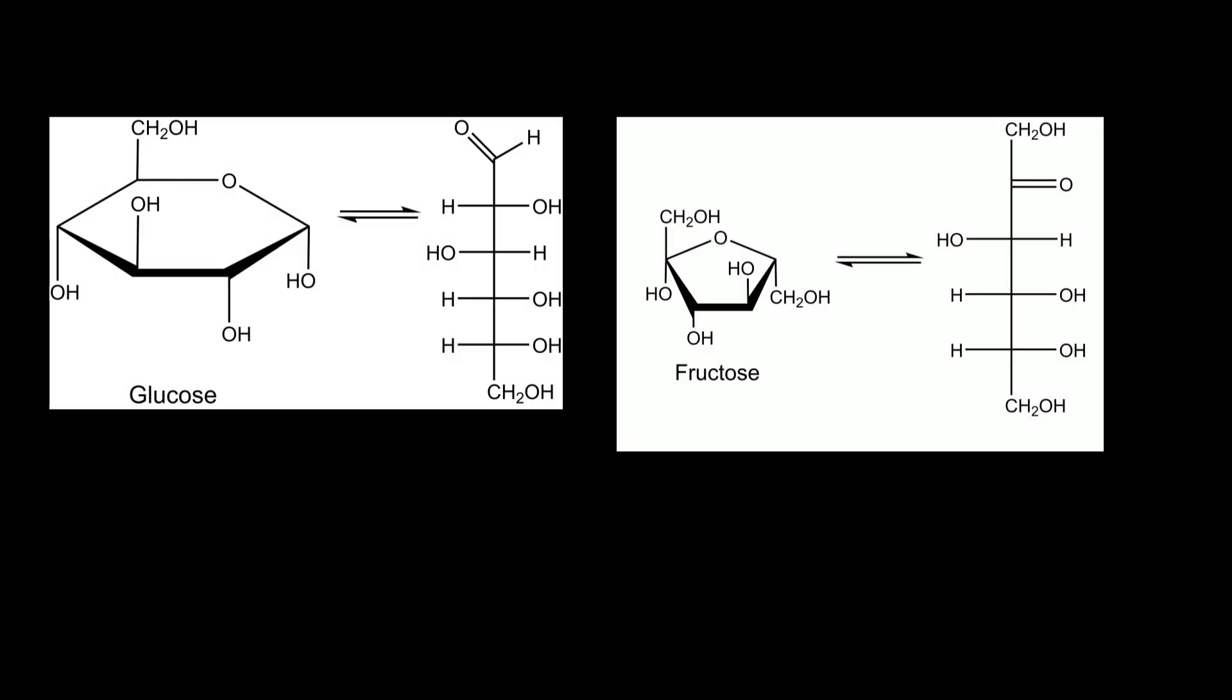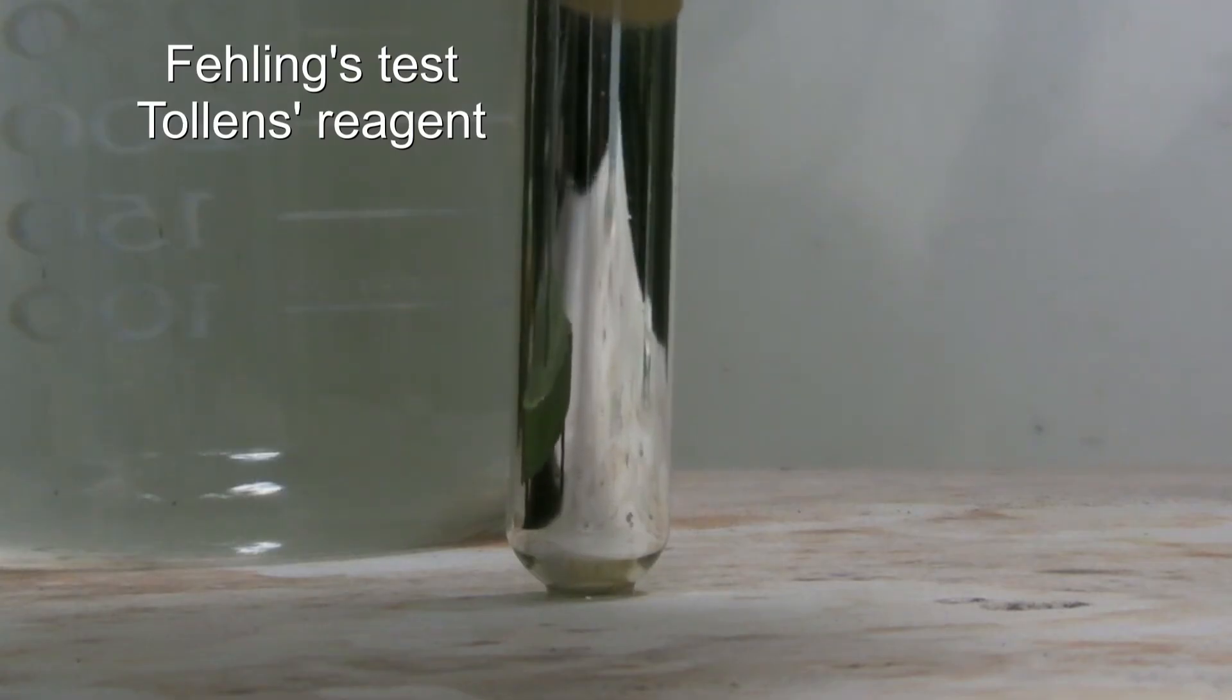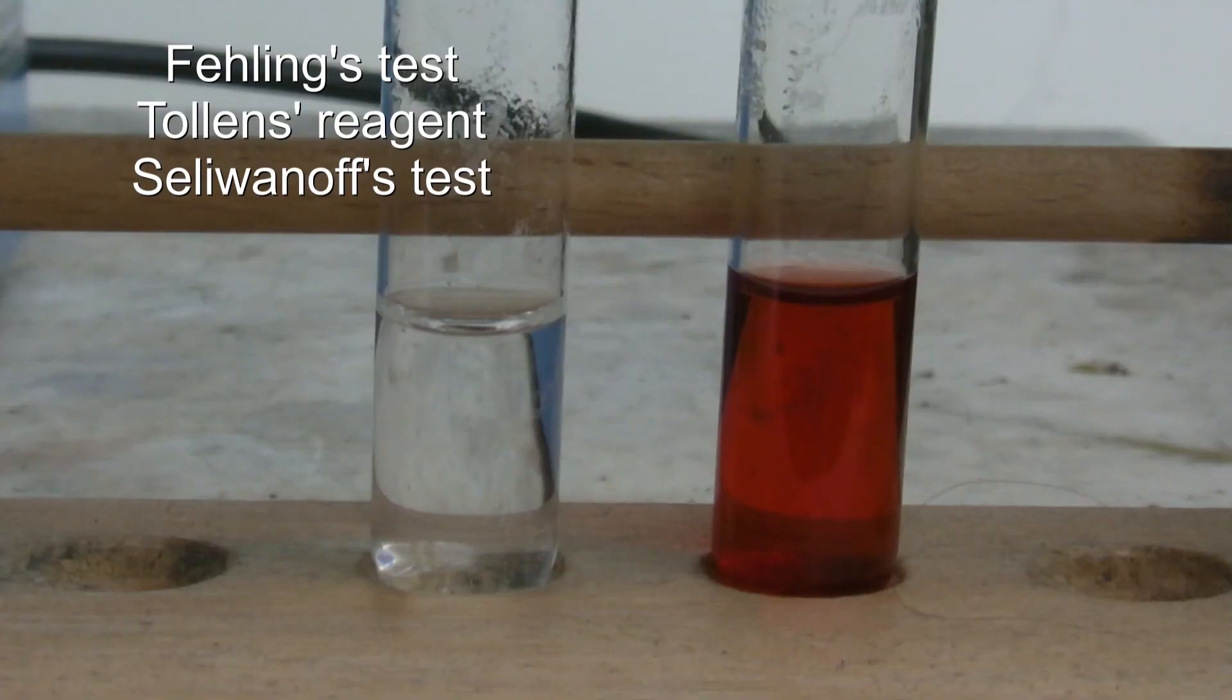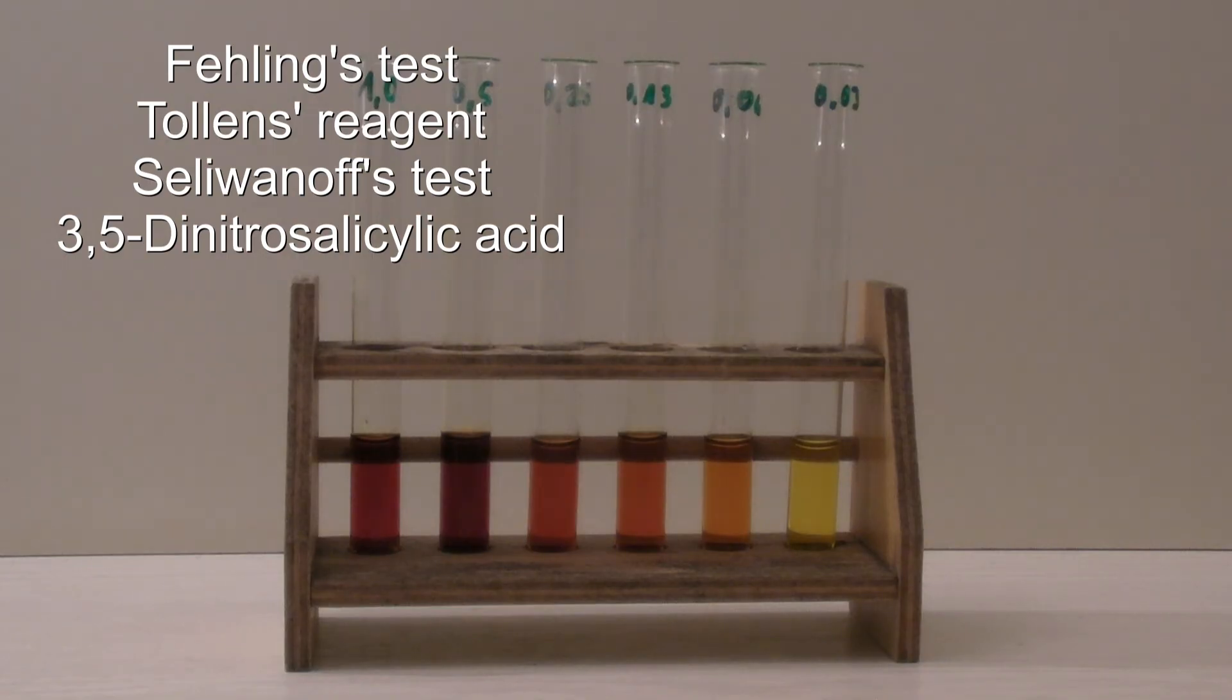When monosaccharides are dissolved in water, an equilibrium is present between the cyclic and the open chain form. In the latter, the functional groups can be determined with reagents, reactions and compounds like Fehling's test, Tollens' reagent, Selivanov's test, or with 3,5-dinitrosalicylic acid.